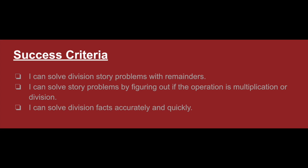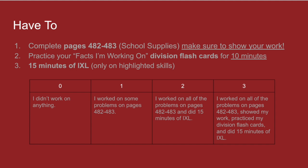For your assignment today, complete pages 482 to 483 school supplies and make sure to show your work. Practice your division flashcards for 10 minutes and then do 15 minutes of IXL only on the highlighted skills. It's really important that you're honest and get those 10 minutes in on your flashcards, or it's only going to hurt you in the long run going into fourth grade — these are facts you need to know fluently. Take a look at the rubric: to get a three, you need to have worked on all problems on pages 482 to 483, shown your work, practiced division flashcards, and done 15 minutes of IXL.